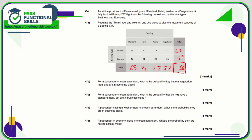The grand total is 188 — 69 plus 119 — and 63 plus 31 plus 37 plus 57 also equals 188. For part a, for a passenger chosen at random out of the 188, what's the probability they're vegetarian and in economy? Vegetarian and economy is 36, so that's 36 out of 188.